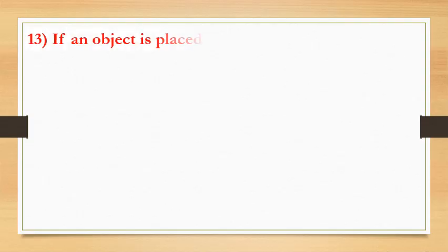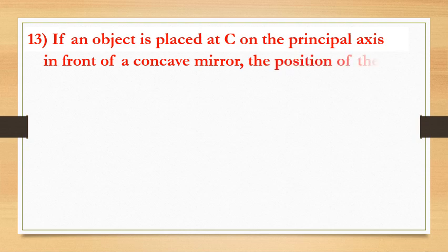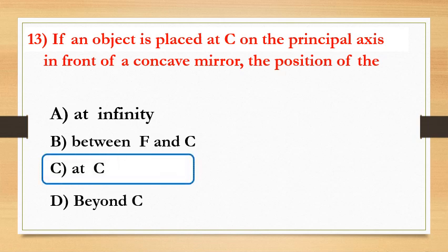Next question: if an object is placed at C on the principal axis in front of a convex mirror, the position of the image is — at infinity, between F and C, at C, or behind C? The answer is between F and C. Observe the picture.